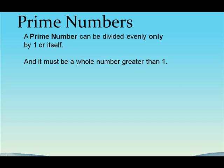So let me give you an example. Let's look at three. The only way three can be divided evenly is by itself. Three divided by three is one. Or divided by one. Three divided by one is three.